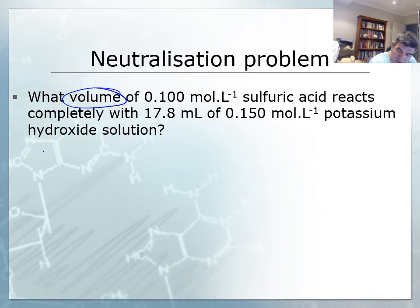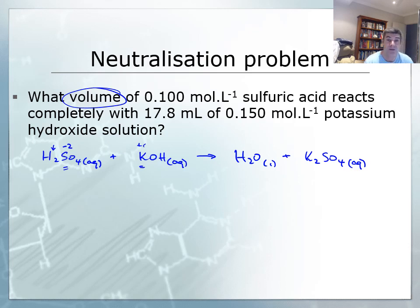We need to know what volume of 0.1 molar sulfuric acid reacts completely with 17.8 mL of 0.15 mol/L potassium hydroxide solution. First, write an equation: H2SO4 aqueous plus KOH aqueous forms water and a salt. The salt is potassium sulfate. Potassium is 1+, sulfate is 2-, so K2SO4. Group 1 metals form soluble salts by NAGSAG, so it's aqueous.